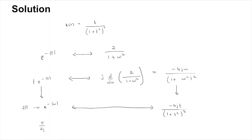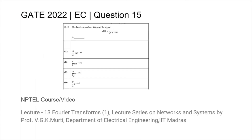You can now bring the -4j term to the frequency domain, so the Fourier transform of t/(1+t²)² becomes π/(2j) · ω · e^(-|ω|). Thus, that is the answer.